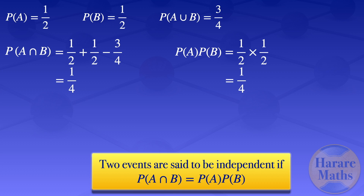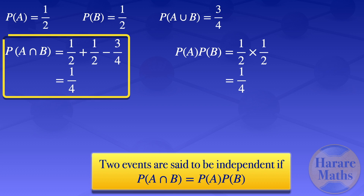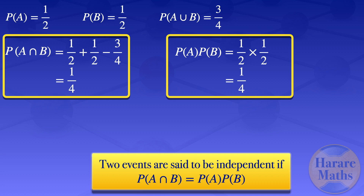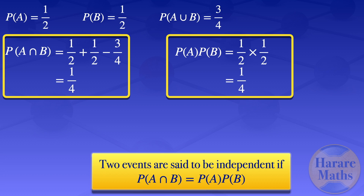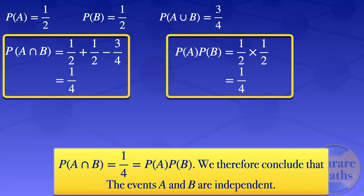Looking at the probability of A intersection B, we see that it is 1/4. The probability of A times the probability of B is also 1/4. So those two probabilities are equal. Using the definition, if the probability of A intersection B is equal to the probability of A times the probability of B, then the two events are said to be independent. Therefore, we conclude that the events A and B are independent.